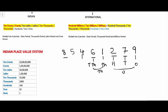4 is at lakhs, 5 at ten lakhs. So lakhs and ten lakhs — this is the lakhs period. So the Indian place value system is divided into 4 periods: ones period, thousands, lakhs, and crores period.